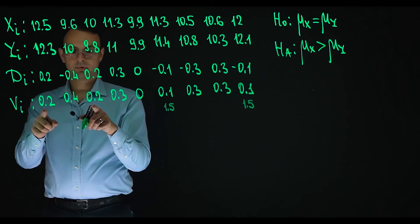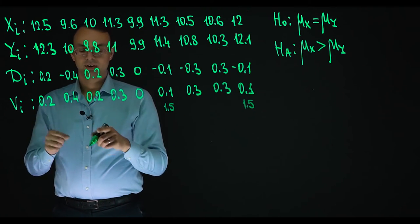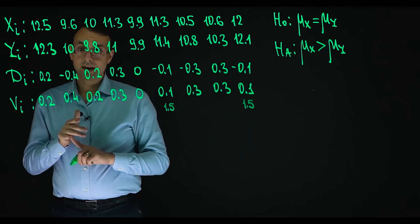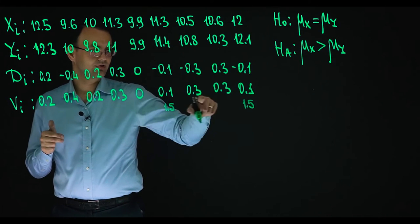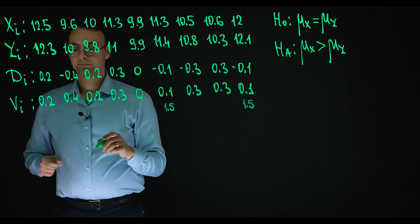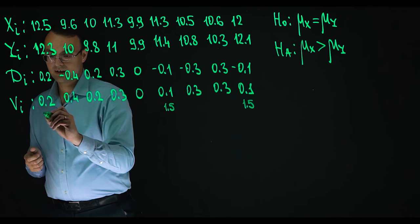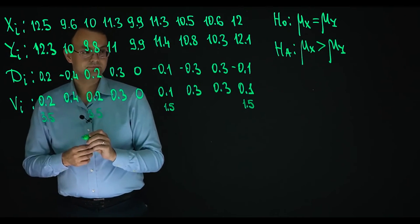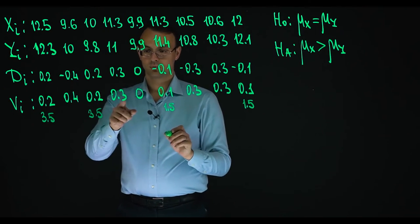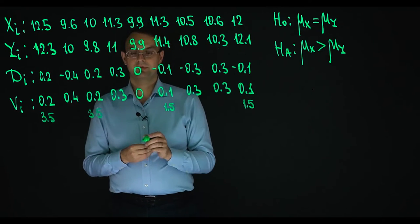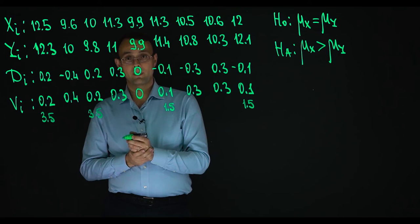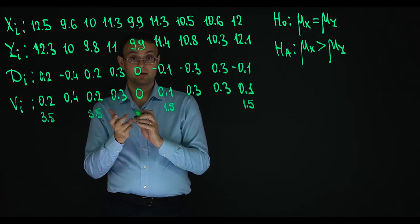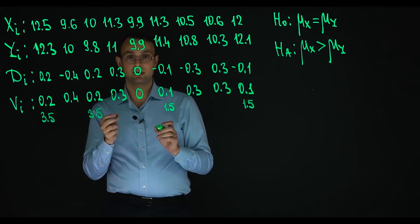Then 0.2 also we see this value twice. So if they were different, their ranks would be 3 and 4. As 1 and 2 is shared between these two values. So their ranks would be 3 and 4. So they get 3.5 and 3.5. Then 0.3, 1, 2, 3 times. So if they were different, their ranks would be 5, 6 and 7. So that is why the average is 6. Average between 5, 6 and 7 is 6. So they all got rank 6.